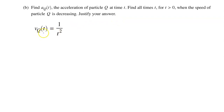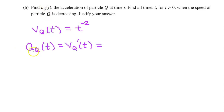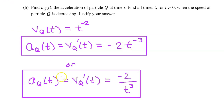They gave us the velocity function, and they are asking us to find the acceleration function. We know that acceleration is the derivative of velocity. So aq of t equals vq prime of t, and that is negative 2 t to the negative 3 power. Make sure you mention aq of t and vq of t in your answer. You need aq of t because that's what they asked you to find, but you must include vq of t because that refers back to the equation that we were given.